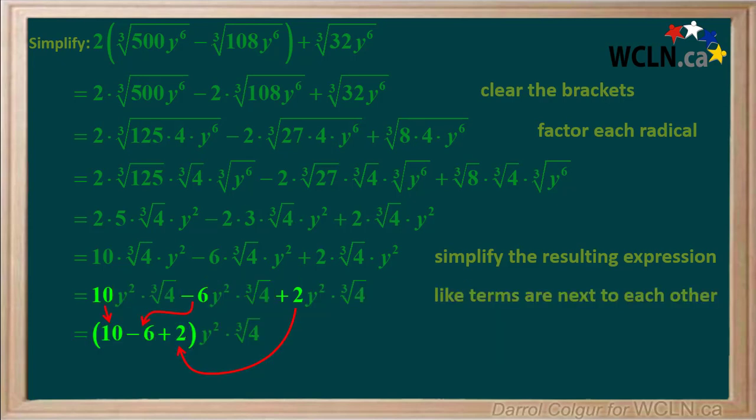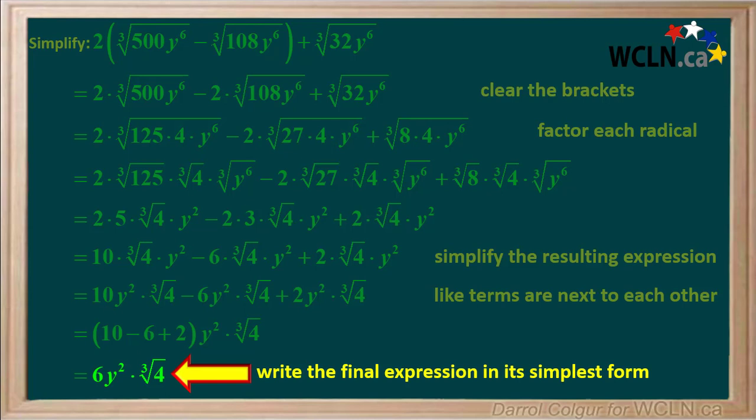This can be written as 10 minus 6 plus 2 in brackets, multiplied by y squared times the cube root of 4. 10 minus 6 plus 2 is equal to 6. So 6y squared times the cube root of 4 is the final expression in its simplest form.